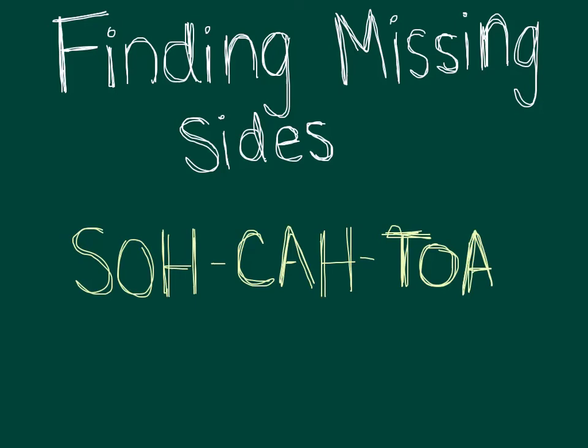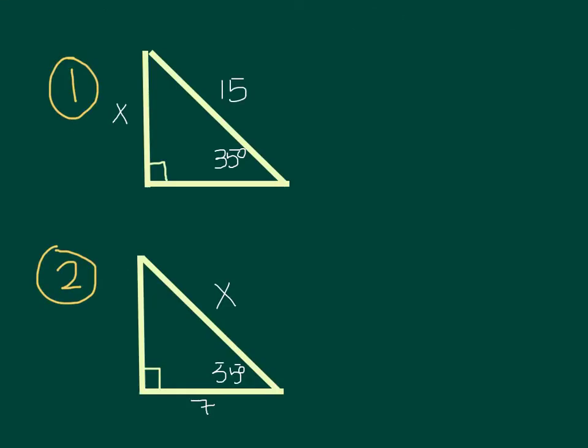This video is going to take you through two examples of finding missing sides of right triangles and two examples of finding missing angles of right triangles using SOHCAHTOA. Let's look first at the first example.